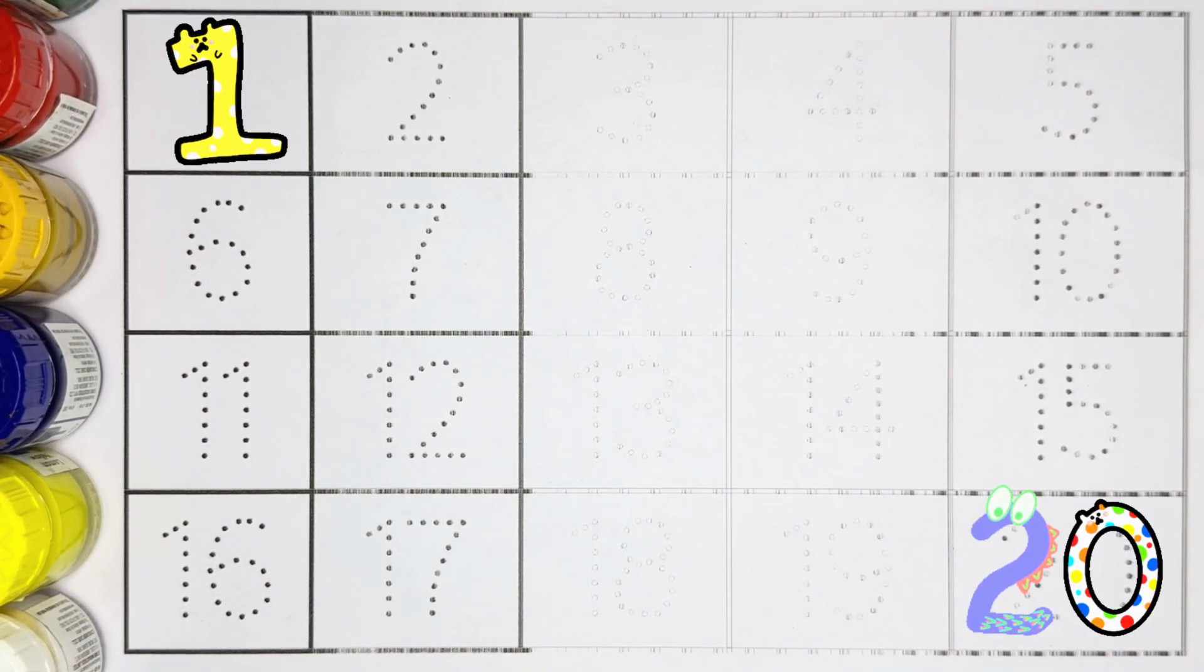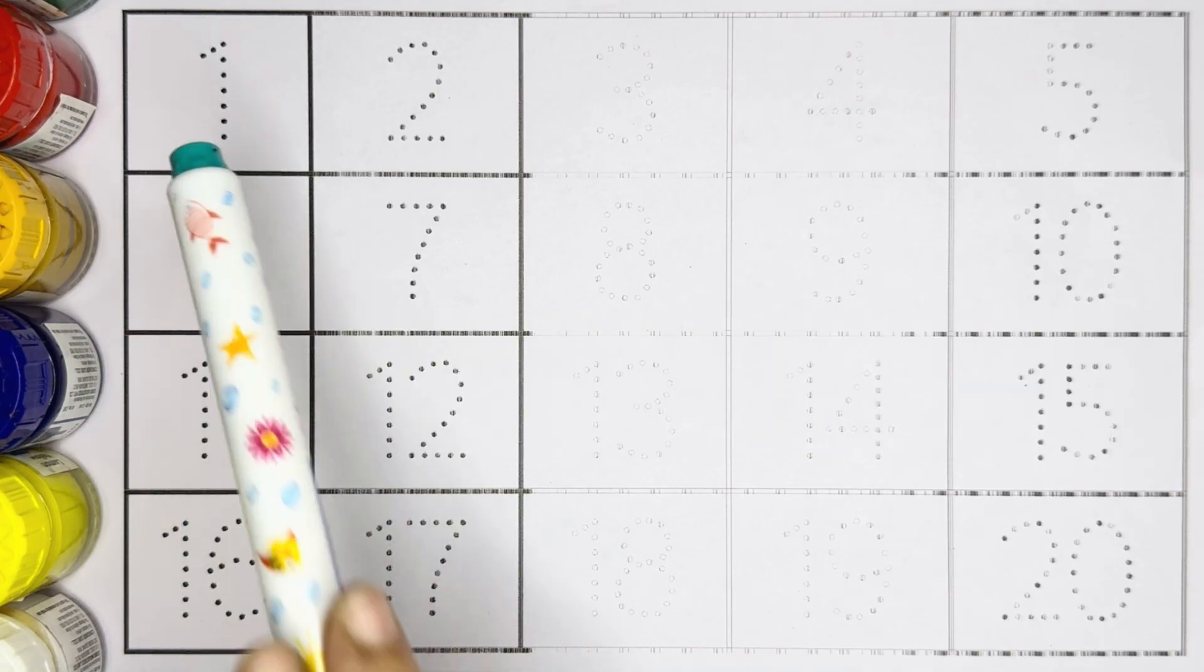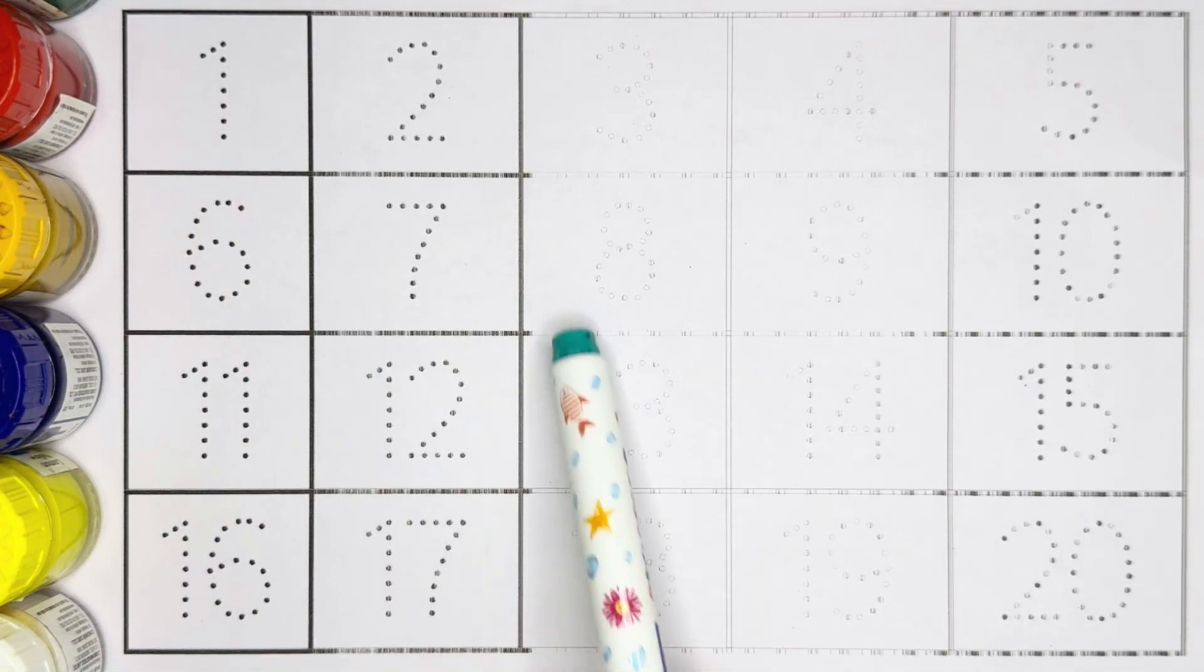Hello kids, welcome to ABC 123 Magical Learning. Let's learn number counting 1 to 20 with tracing and coloring.